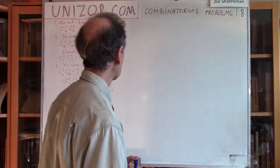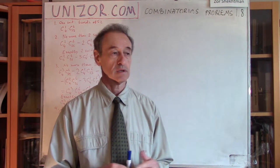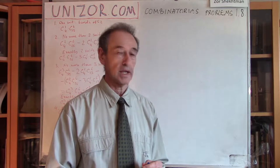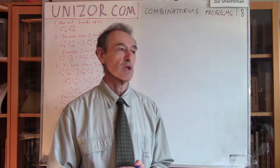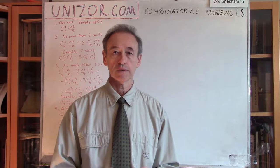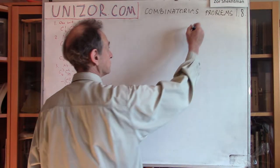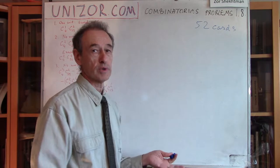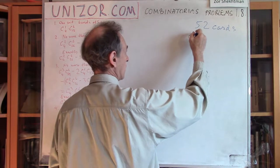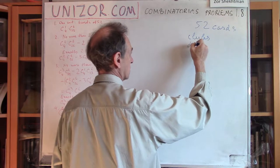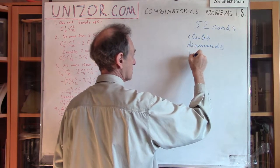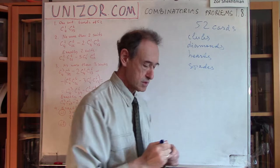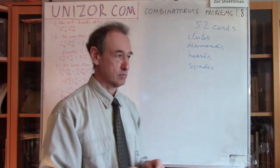Four problems, and they are basically about more or less the same thing with just different numbers, and that's about playing cards. I will use playing cards as a great tool. The deck I'm talking about is the standard 52-card deck. It has four different suits: clubs, diamonds, hearts, and spades — four suits, thirteen cards each.